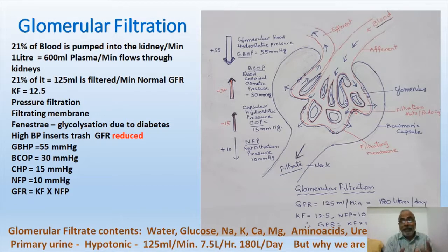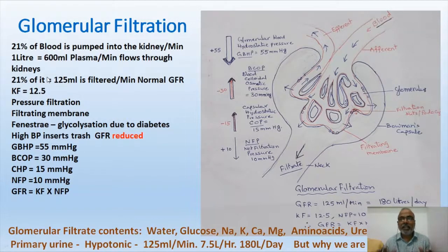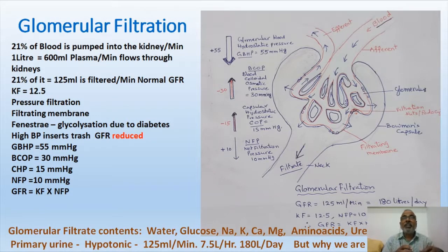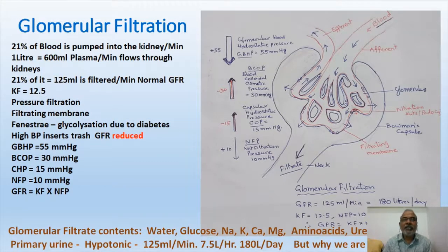Of 600 ml of plasma received, at least 21% must be filtered — that is 125 ml. In a healthy person, every minute kidneys filter 600 ml of plasma and produce 125 ml of glomerular filtrate. This is a constant value in a healthy person, recorded as the filtration constant Kf = 12.5. Kf × NFP = 12.5 × 10 = 125 ml.